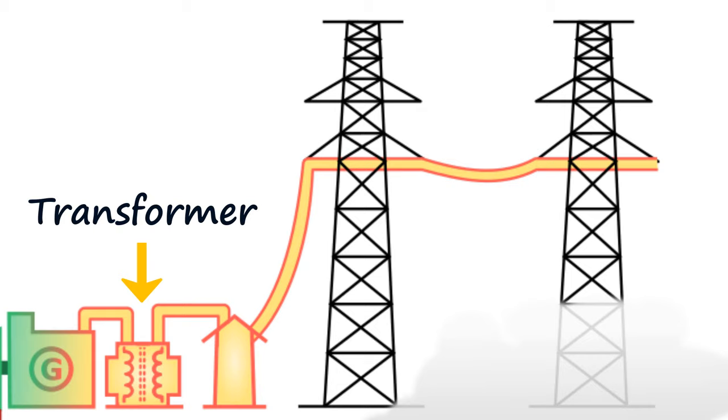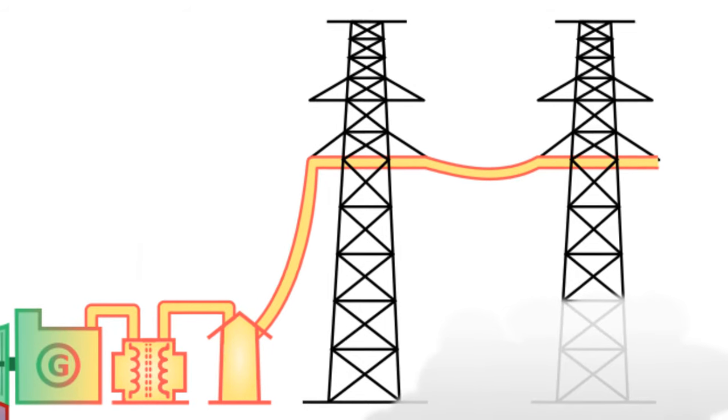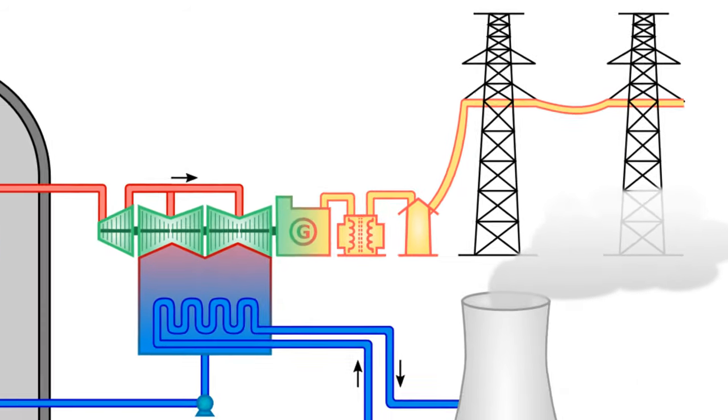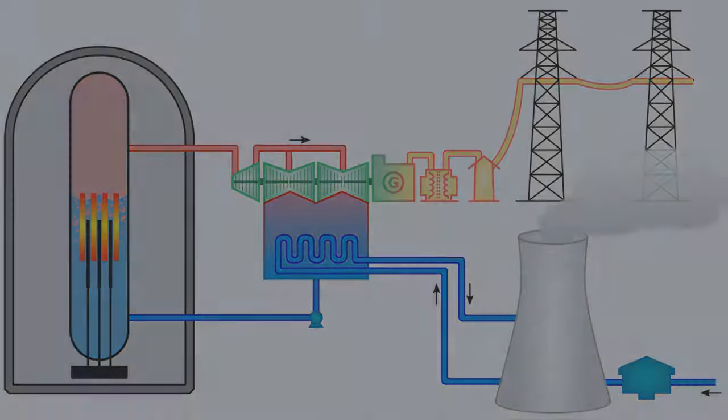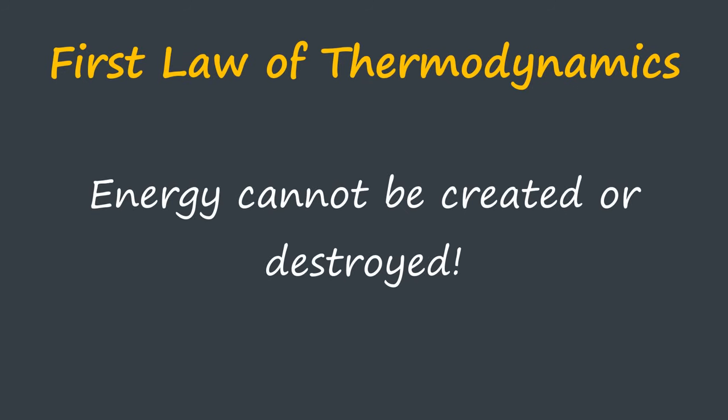Although we talk about generating power, we're not actually generating anything. It's not possible to generate energy. We're only ever transferring energy from one place to another. In our example here, we're taking the heat energy from our nuclear reaction, transferring it to our demineralized water, then to steam. Then we transfer the heat energy to the turbine so we have mechanical energy because the turbine begins to rotate. And finally, we change that mechanical energy to electrical energy using a generator. So the entire process is simply an energy conversion process.